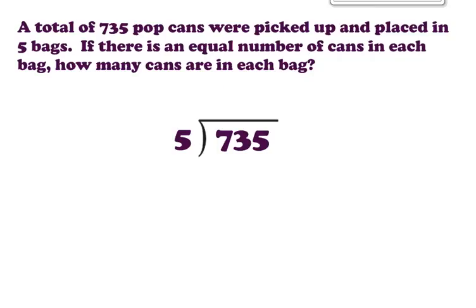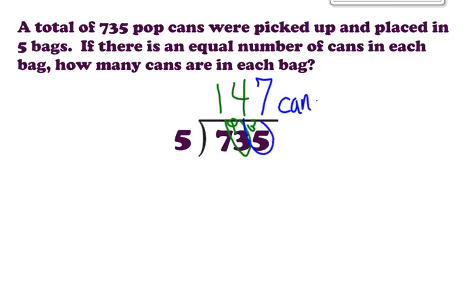5 goes into 7 one time. 7 minus 5 — we know we have a leftover 2, so that 2 goes right there under the bar. Next, 5 goes into 23 four times. Four times 5 is 20. 23 minus 20 gives us 3 left over, so 3 goes here. Finally, our last group is now 35. 5 goes into 35 seven times. So using short division, there are 147 cans in each bag.